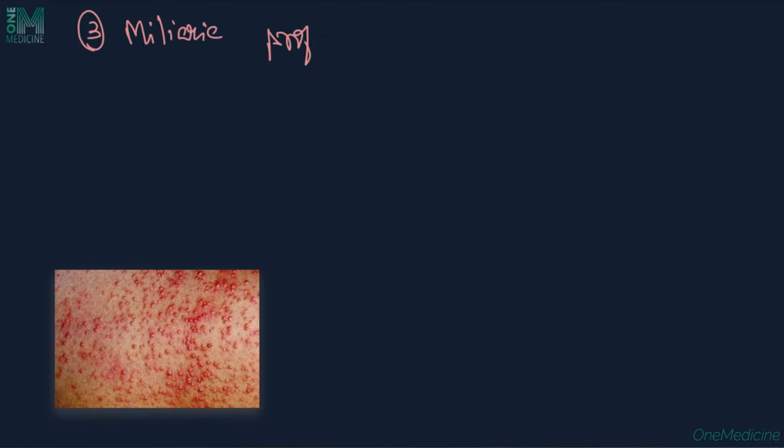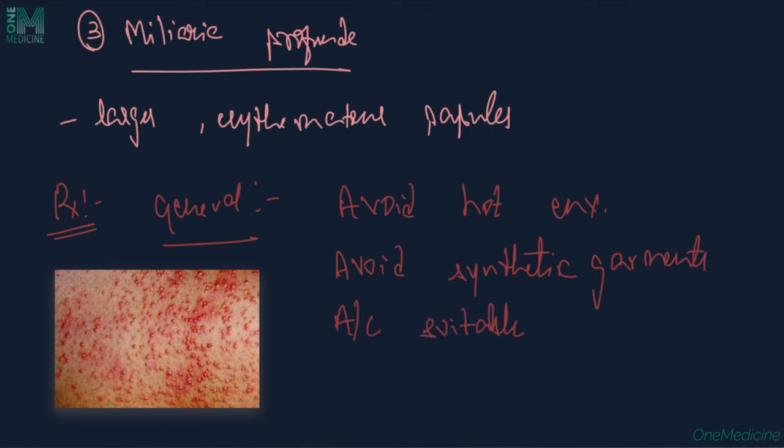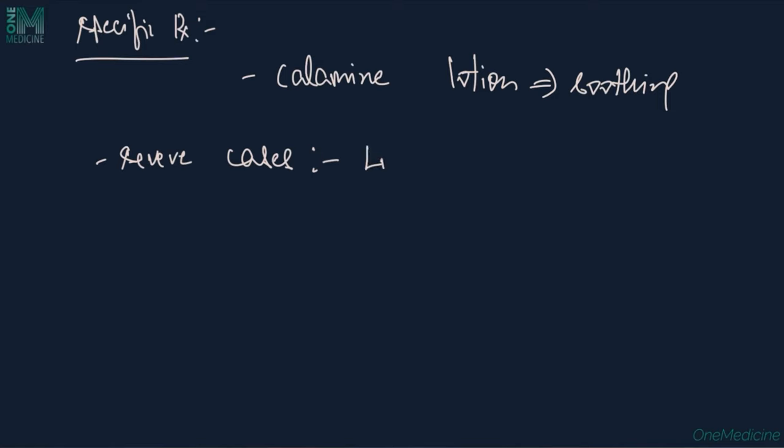Milaria profunda presents with larger erythematous papules. Treatment: General measures include avoiding hot humid environments and synthetic garments. Air-conditioned environment is ideal. Not only undergarments but also top wear should be cotton. Specific treatments include calamine lotion for soothing. For severely symptomatic patients, low to mid-potency topical steroids can be used for symptomatic relief.